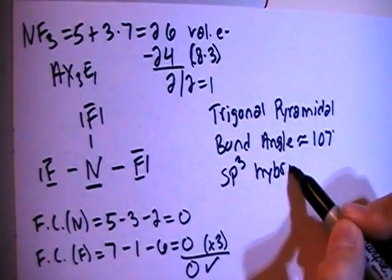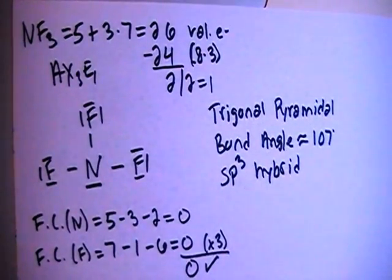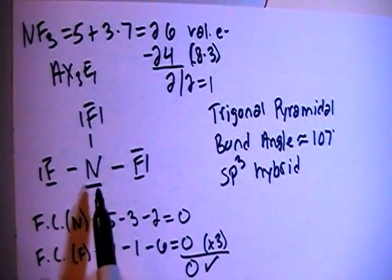1S, 3Ps, that means 4 total orbitals for the 4 electron groups, all right?